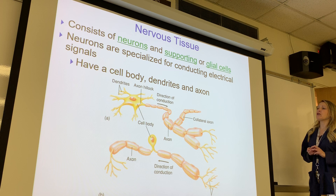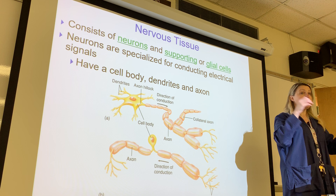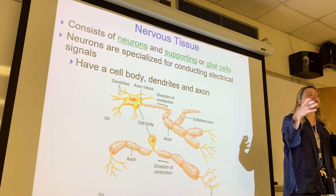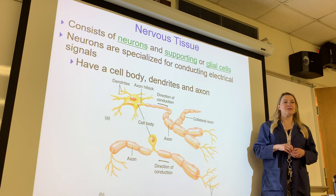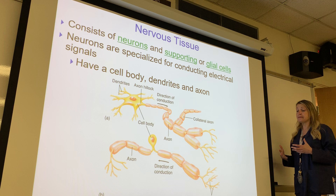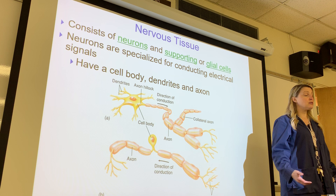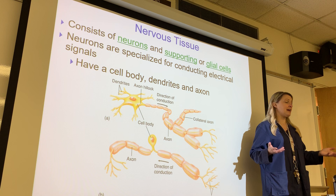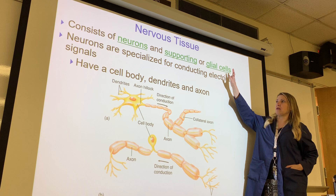Nervous tissue consists of neurons and glial cells. The neuron is responsible for sending signals and conducting communication to muscles or glands. Glial cells are the supporting cells — there are far more glial cells than neurons. Without glial cells, neurons could not function. Glial cells provide nutrition, structure and support, and help recycle chemical signals.